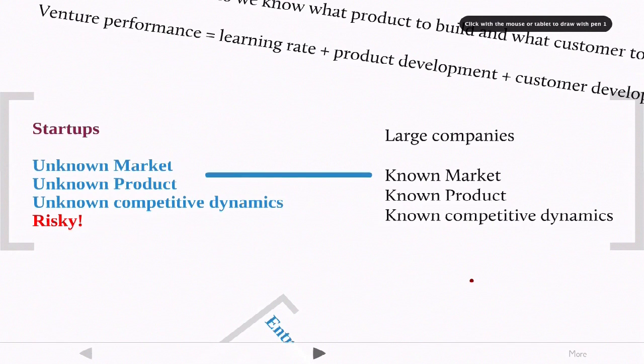So if we're in this large company world where we have all these known facts, then it's much easier to go through a planning process. And this led to our initial approaches to try and teach entrepreneurship, which was through writing business plans and having business plan writing competitions. But this planning type of process only works well when you have all of the facts, when you know what the market is and you know a lot about what the product should be. When you're in an unknown market with unknown products and unknown competitive dynamics, then we need to do something other than planning.